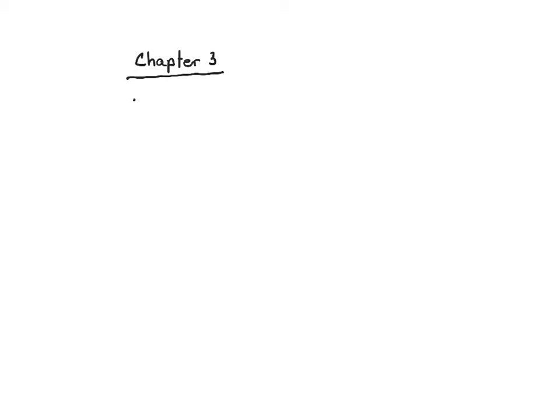One of the steps towards this end was the development of the atomic mass unit. The atomic mass unit is symbolized as AMU, and its value is actually kind of arbitrarily set. It has to be referenced to a particular atom, and there was some debate over this for some time between chemists and physicists. Ultimately, they defined that one atom of carbon-12 has a mass of 12 atomic mass units.